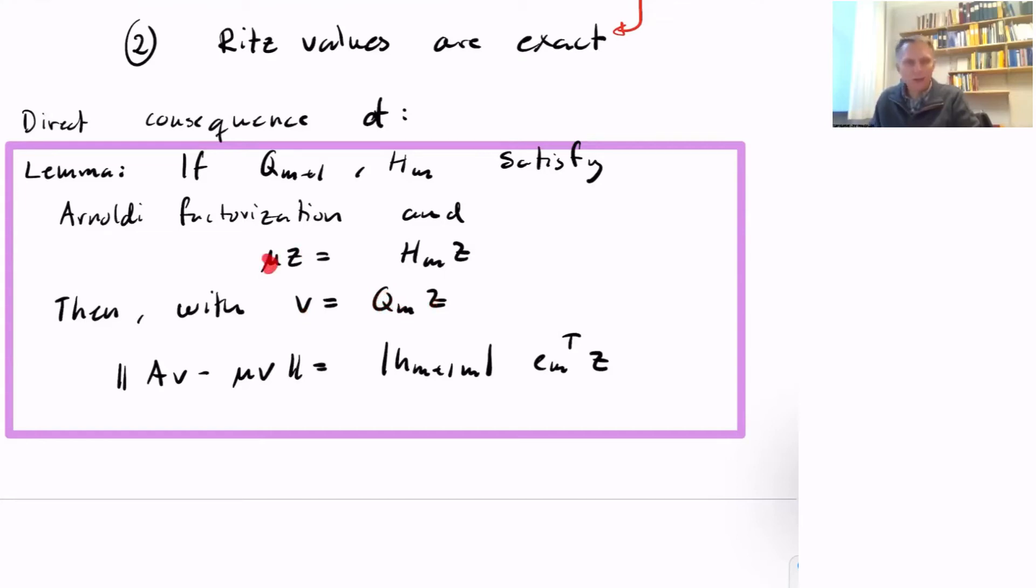We have formed an eigenpair approximation mu, V, and now we're going to look at the residual corresponding to this eigenpair approximation. The residual AV minus mu V is equal to H_M+1,M times e_M^T z, where e_M is the M-th unit vector.